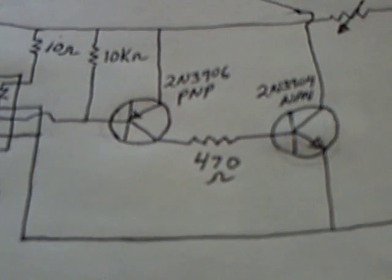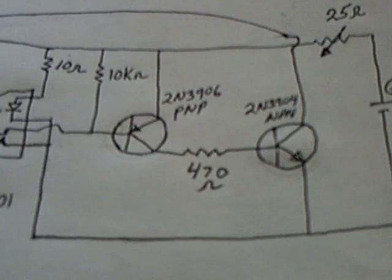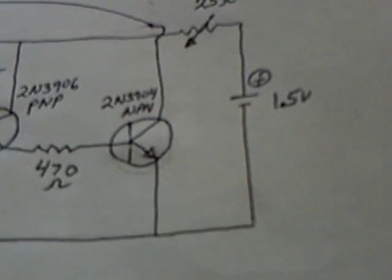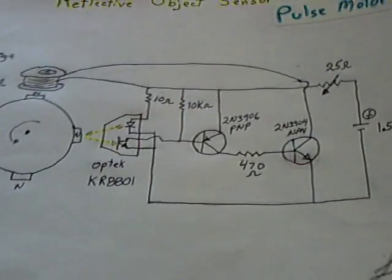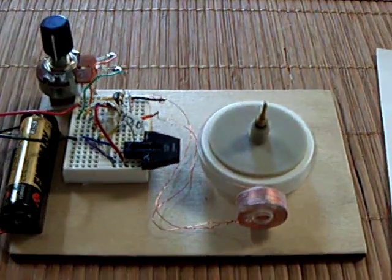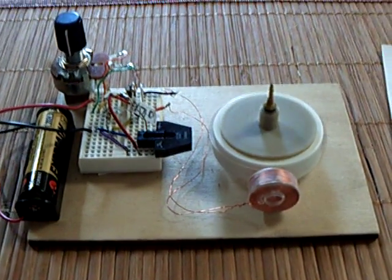One's a PNP transistor. The other one's an NPN. I'm sure there's all kinds of other values that could be used here. But getting this to run on a volt and a half was one of my big goals. And there it is. The reflective object sensor pulse motor. Thanks for watchin'.